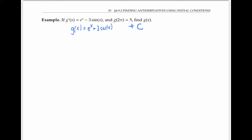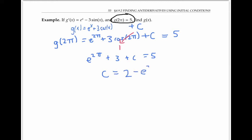Now I need to find the value of the constant C that makes this initial condition come true. If I plug in two pi for x, I get e to the two pi plus three times cosine of two pi plus C, and that needs to equal five. Since cosine of two pi is one, I have e to the two pi plus three plus C equals five. And so C is equal to two minus e to the two pi.